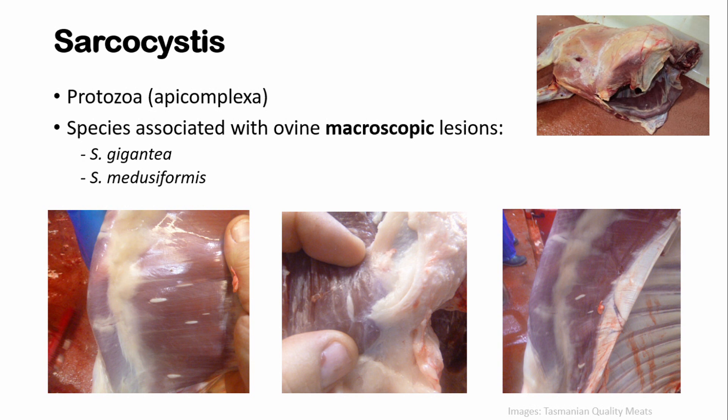The macroscopic species are S. gigantica and S. medusiformis. The typical mature lesions — the cysts — look similar to rice grains: little white rice grains that follow the direction of the muscle fibres. This is important for the industry because it is a source of wastage of sheep meat that could otherwise enter the human food chain. Carcasses may be rejected if heavily contaminated or may be trimmed, which incurs extra time and costs for the abattoir.